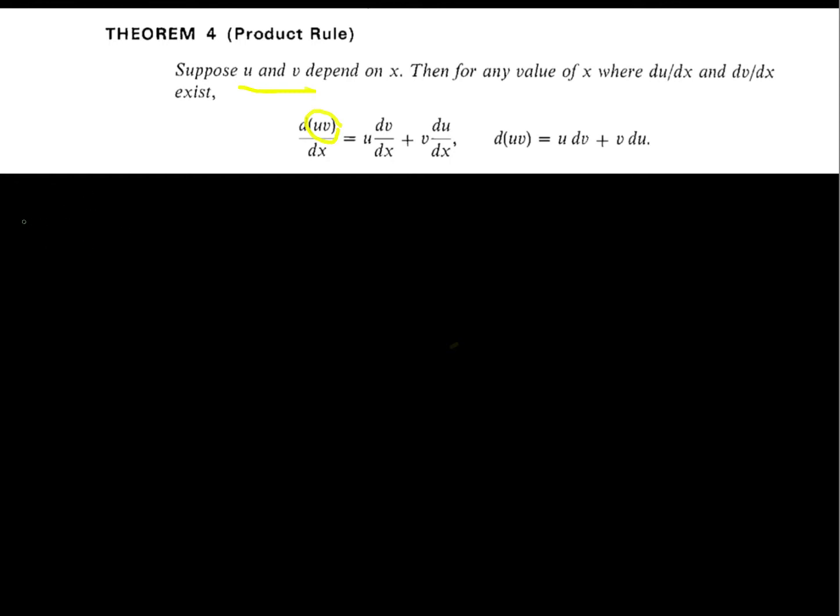So first thing, this should be familiar now, we need to compute what is the change in uv. So this is u of x plus delta x, v of x plus delta x, minus u of x, v of x.